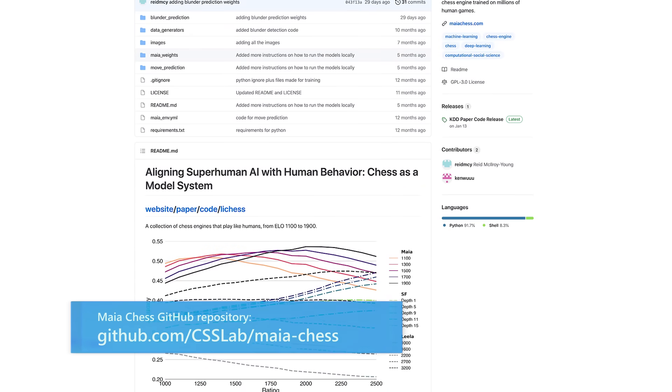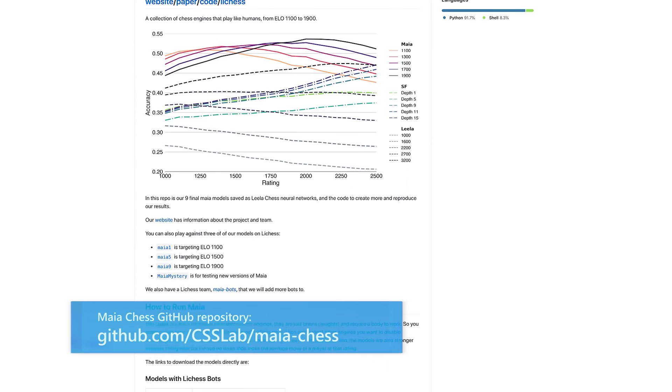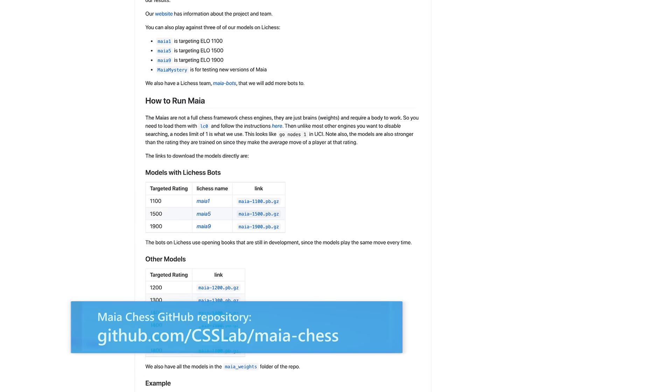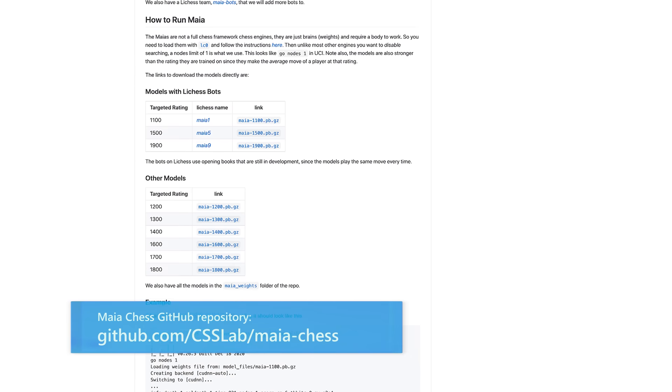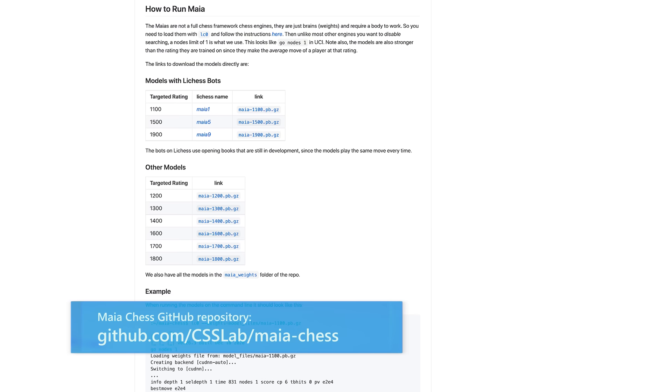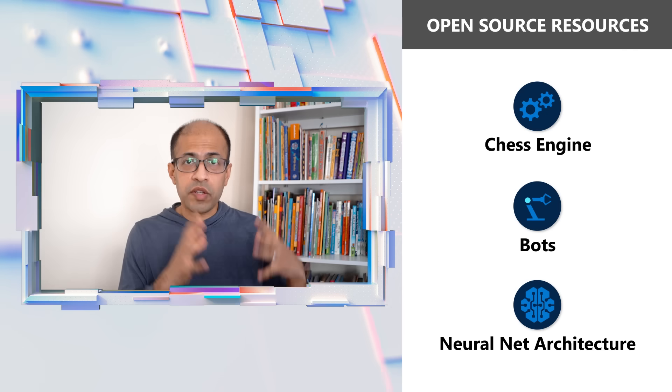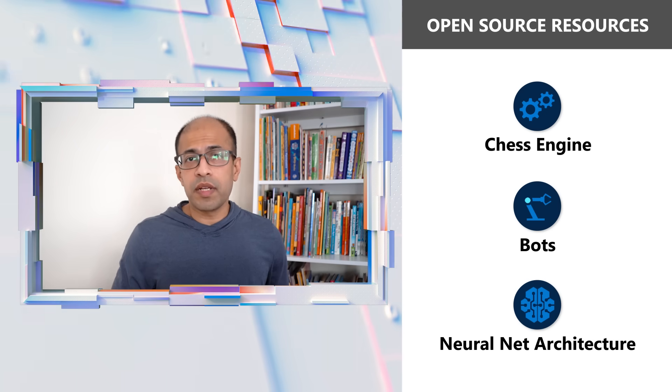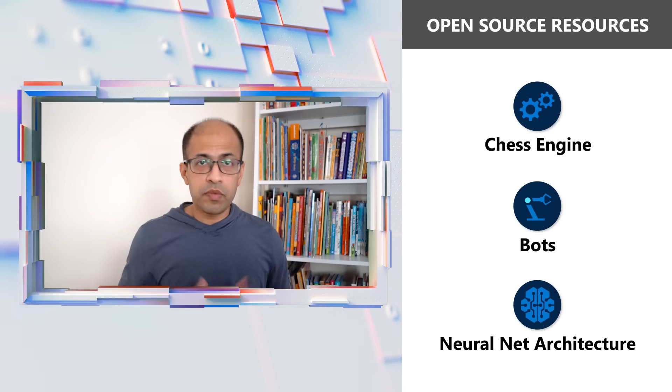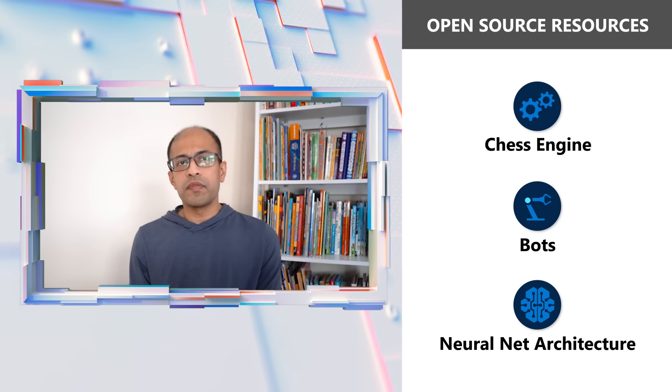Maya is an open source project and we've put all our code up online. So in theory, any developer can use this code to train a neural network and train a Maya engine for a particular skill level or for a particular person, if they have enough training data. And for us, training data means chess games that you've played online. We've open sourced our code, which includes the chess engines and bots that we've created and the neural network architecture and the code for training these neural networks so that you can create your own chess engines using publicly available chess data, whether it's a set of people's games or if it's a particular individual games, whatever you would like. So this is available for developers to use and to build on.